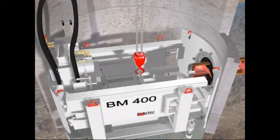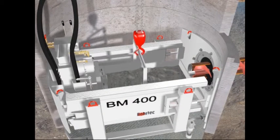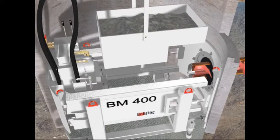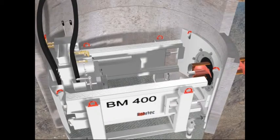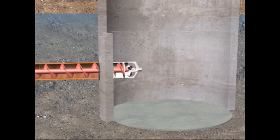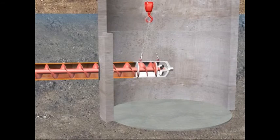The excavated material that is conveyed out by the augers falls into the muck skip in the working shaft. After the completion of each boring stroke, the muck skip is lifted out of the shaft and emptied before the next casing and auger are put in place. When the reamer reaches the reception shaft, it is disconnected and lifted out.